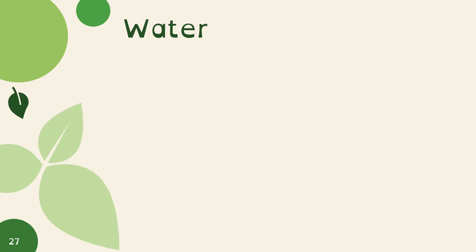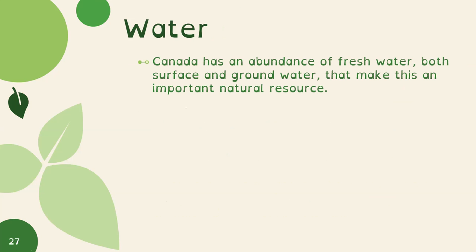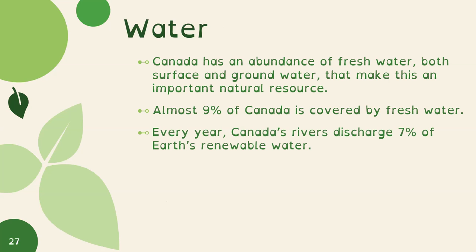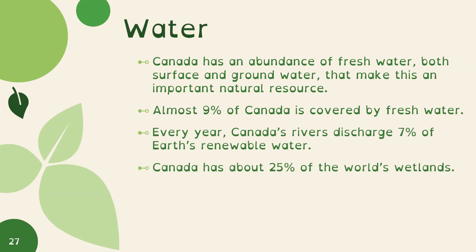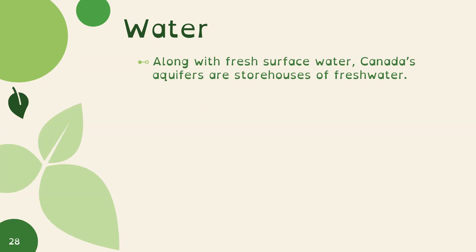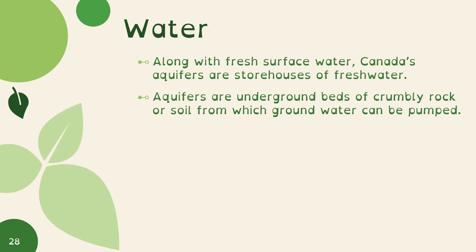Now let's talk about water. Canada has an abundance of fresh water — both surface and groundwater — making this an important natural resource. Almost 9% of Canada is covered by freshwater, and Canada has over half the world's freshwater access. Every year, Canada's rivers discharge 7% of Earth's renewable water. Canada has about 25% of the world's wetlands. 8.5 million Canadians get their drinking water from the Great Lakes, which also supports 25% of Canadian agriculture. Canada's aquifers — underground beds of crumbly rock or soil from which groundwater can be pumped — are also storehouses of freshwater, and there is more water underground in Canada than above ground.